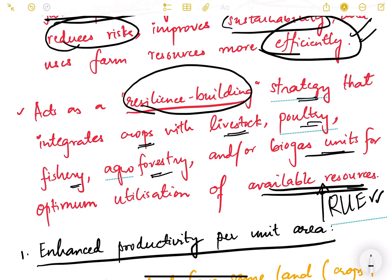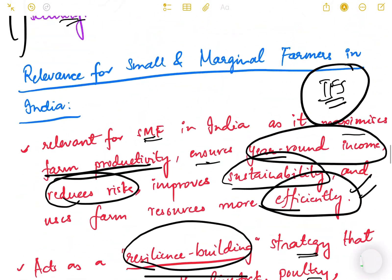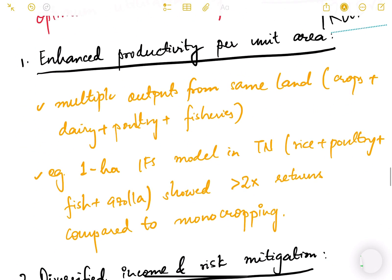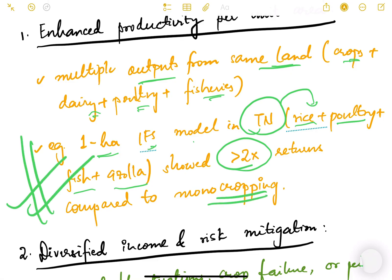Enhanced productivity per unit area - productivity increases because you are having multiple activities, multiple outputs from the same land. Crops plus dairy plus poultry plus fisheries. For example, one hectare IFS model in Tamil Nadu with rice plus poultry plus fish plus azola showed that returns increased by two times compared to monocropping. This is a true practical example from Tamil Nadu.